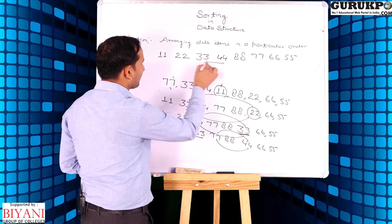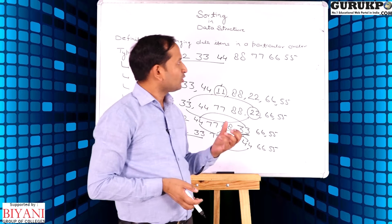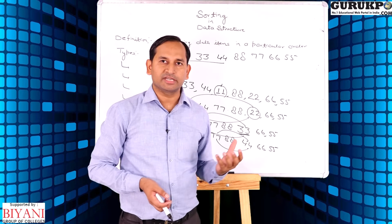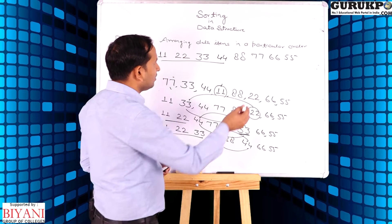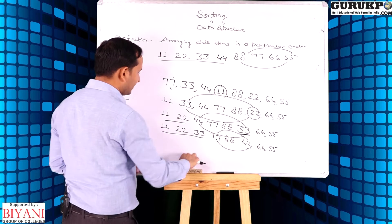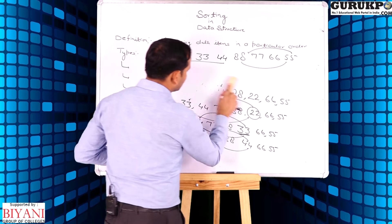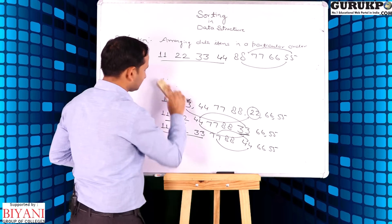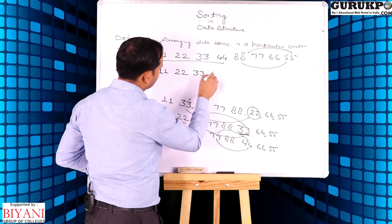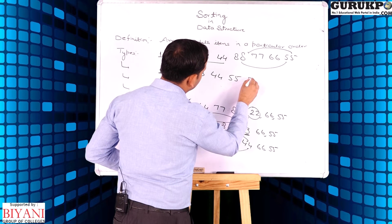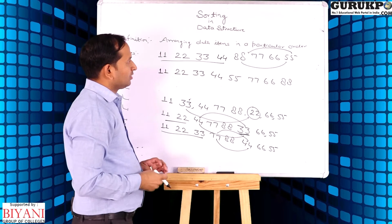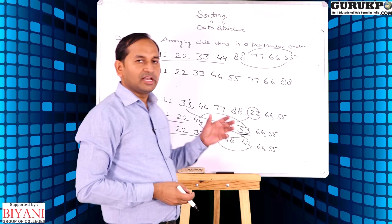Now we apply scanning again and find out the smallest element in the remaining list. In the remaining list, we can easily observe 55 is the smallest element. We insert 55 into the fifth location. Now the remaining list will be in sorted form.